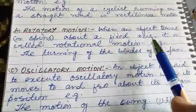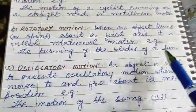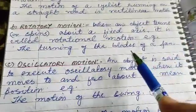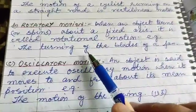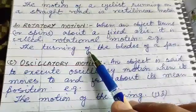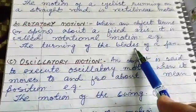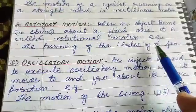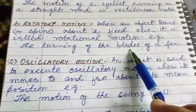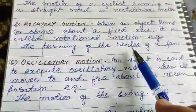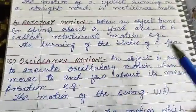Example of rotational motion: the turning of the blades of a fan. The fan blades turn around an axis — that is rotational motion.